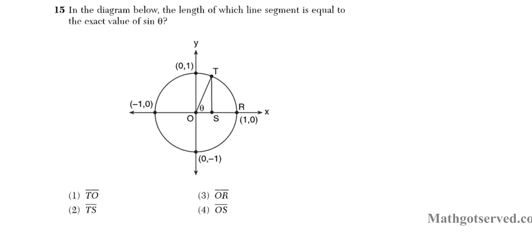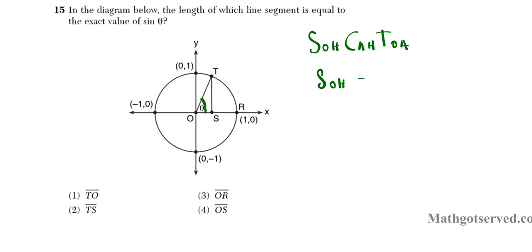Question 15 asks: in the diagram, which line segment equals the exact value of sine theta? Using the SOH-CAH-TOA trig ratio, sine is opposite over hypotenuse. If this is the reference angle theta, the side opposite the angle is called the opposite side, and since there's a 90-degree angle, the side opposite that is the hypotenuse. So sine theta equals segment TS over segment OT.